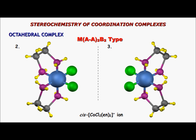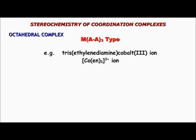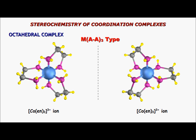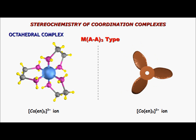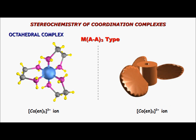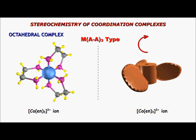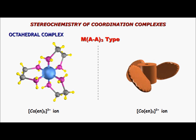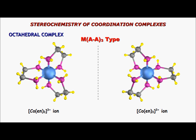These enantiomers are named by a convention best explained with the MAA3 type — for example, trisethylenediamine cobalt(III) ion. This complex has no geometric isomer but is optically active because it has no plane of symmetry. By looking at the molecule, it resembles a propeller. Examining the propeller: if it is rotated clockwise, the fluid in front is pushed downwards — this is a left-handed propeller, and the molecule representing it is called the lambda isomer.